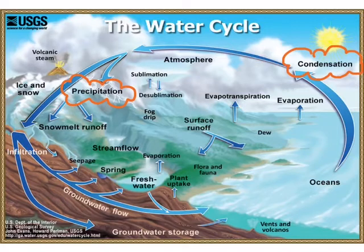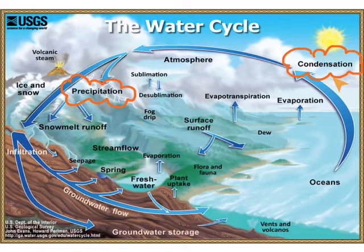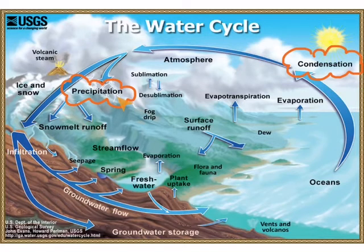Today we're just going to focus on condensation, which is when water in the atmosphere cools to form different cloud types, and precipitation, which is when water falls in a variety of different ways back to Earth.